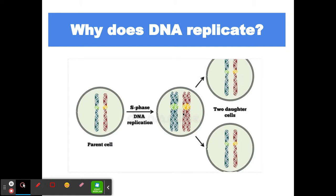In between, we have those Xs, which is too much DNA. So we pull those Xs apart and both daughter cells have the right amount. We duplicate the DNA so that each new cell has a complete set.